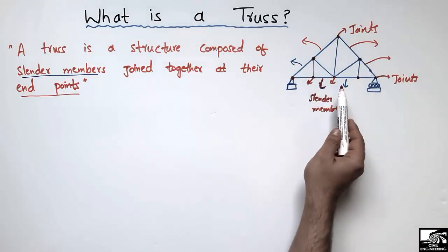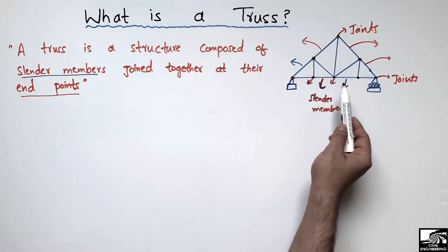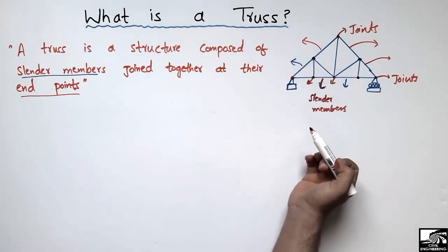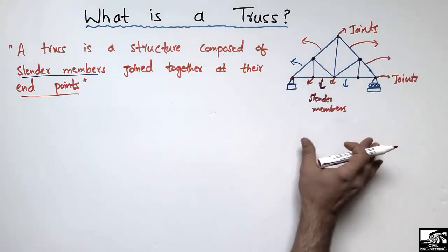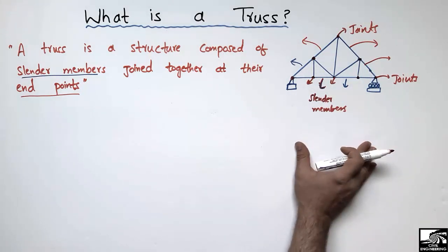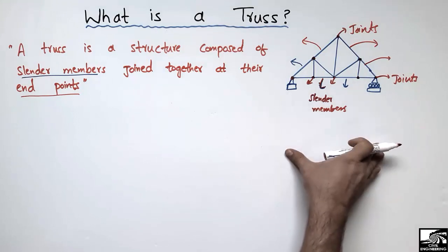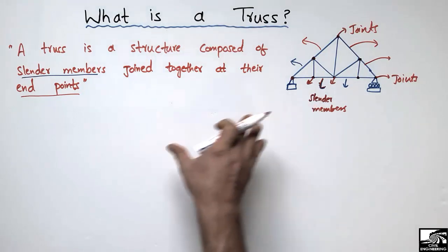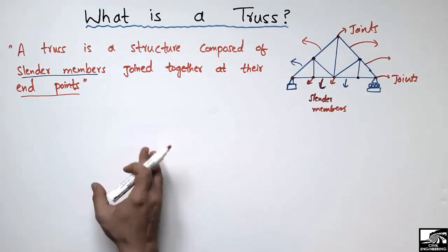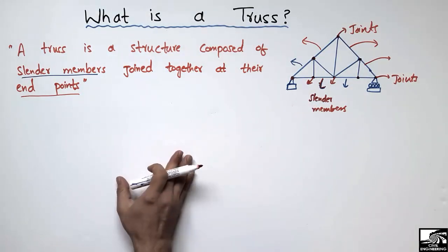A truss structure is basically a lightweight structure, mostly used in mechanical and civil engineering structures for long spans.